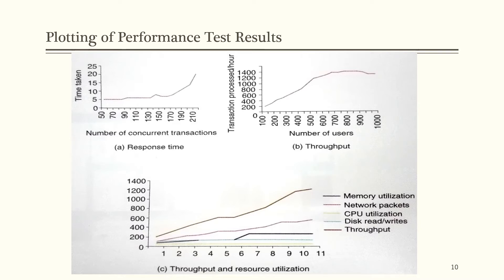Plotting of performance test results. Graph A shows the relation between number of concurrent transactions and the time taken to execute those transactions. As the number of concurrent transactions increases, time taken for the transaction remains constant up to some point. After that, with the increase in transactions, time taken increases rapidly. This increase is due to the limited capacity of the system to handle concurrent transactions.